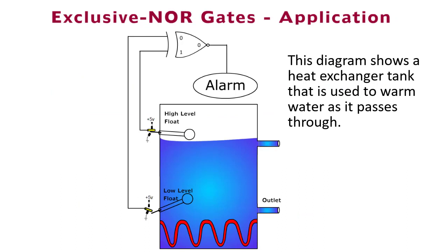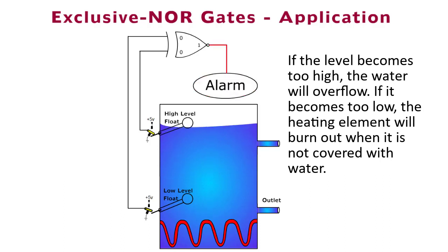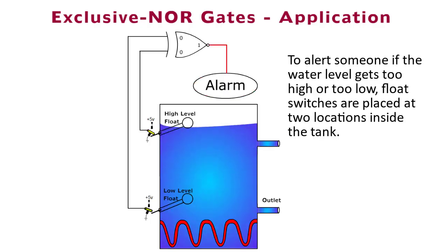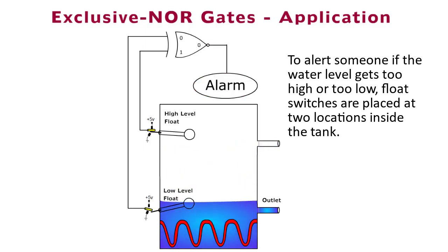This diagram shows a heat exchanger tank that is used to warm water as it passes through. If the level becomes too high, the water will overflow. If it becomes too low, the heating element will burn out when it is not covered with water. To alert someone if the water level gets too high or too low, float switches are placed at two locations inside the tank.